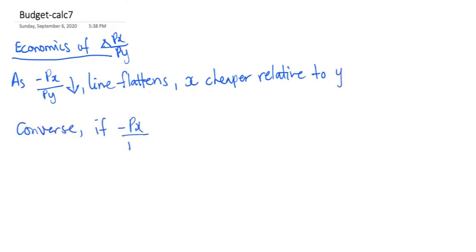It's important to be aware of the economics behind the relative price ratio, Px over Py. If this is decreasing, it means X is becoming cheaper relative to Y. If it increases, the opposite applies.